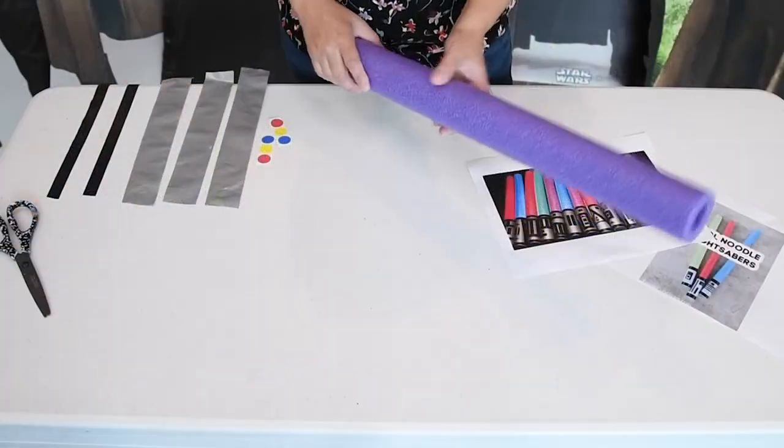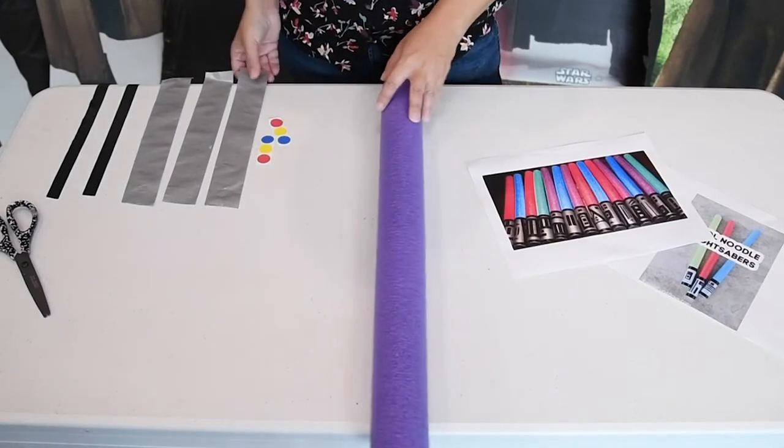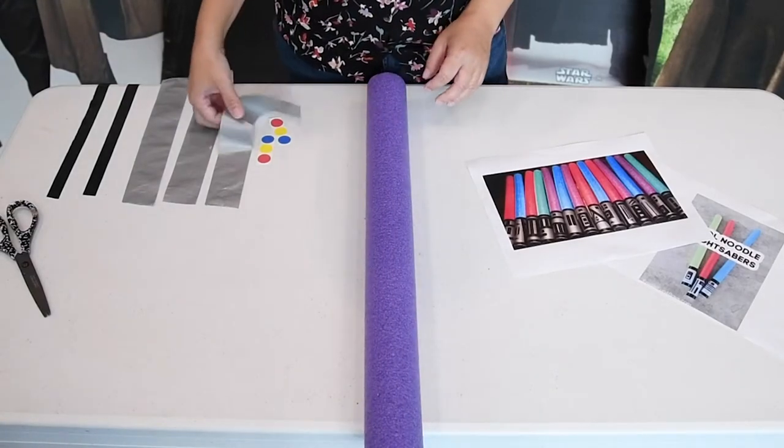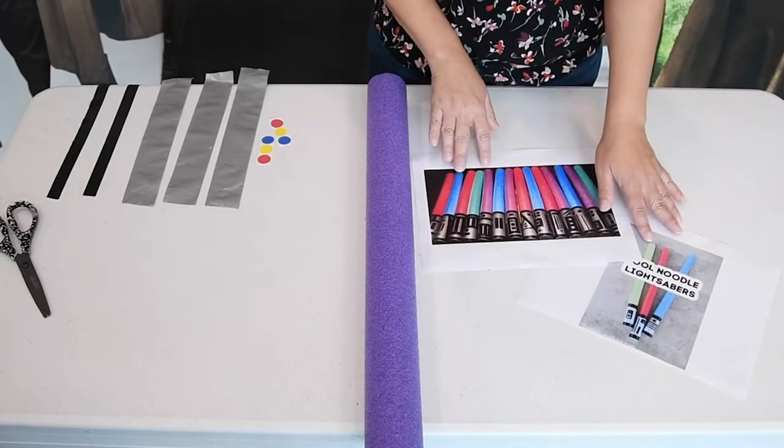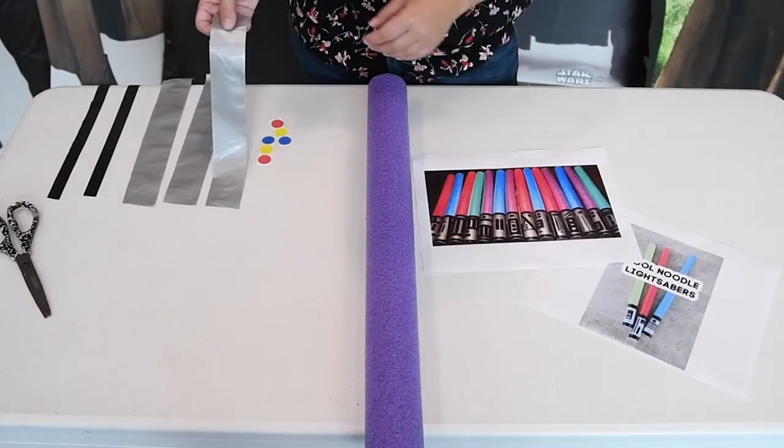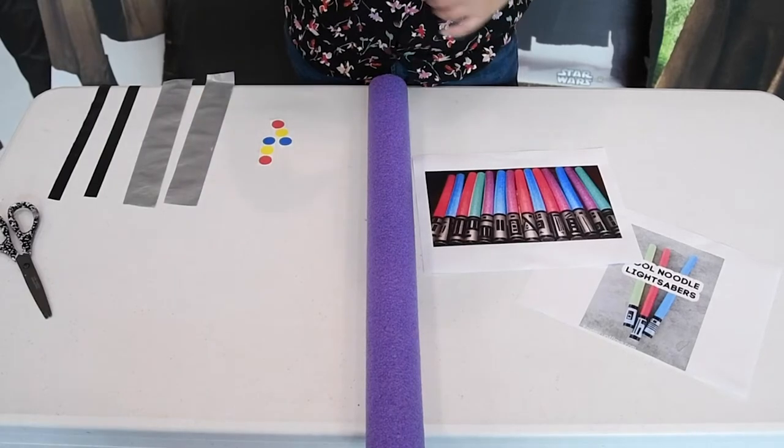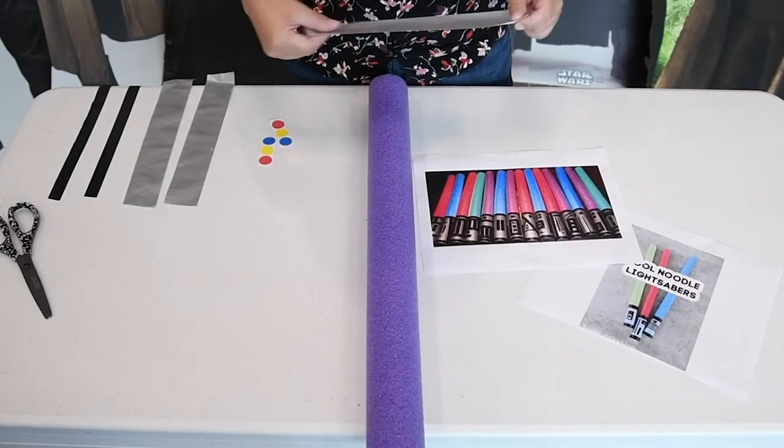Let's get started. The first thing we're going to do is start decorating with our duct tape. You may want to think about what kind of design you want to do. I've got some examples here, and you can also maybe have your grown-up help you look online if you'd like to see some pictures.